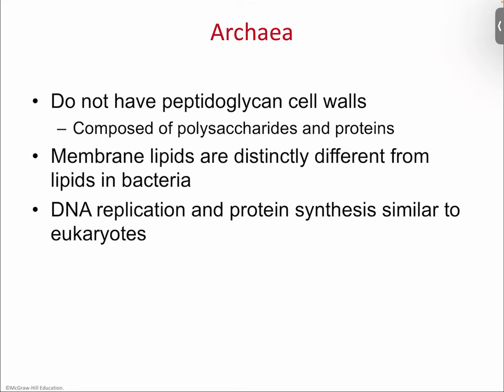Archaea are different from typical bacteria like E. coli, Salmonella, and Staph. They don't have a peptidoglycan wall like most prokaryotes — their wall is composed of polysaccharides and proteins separately, not a fusion molecule. The thing about archaea is that it's part prokaryote and part eukaryote, which makes it a little strange.